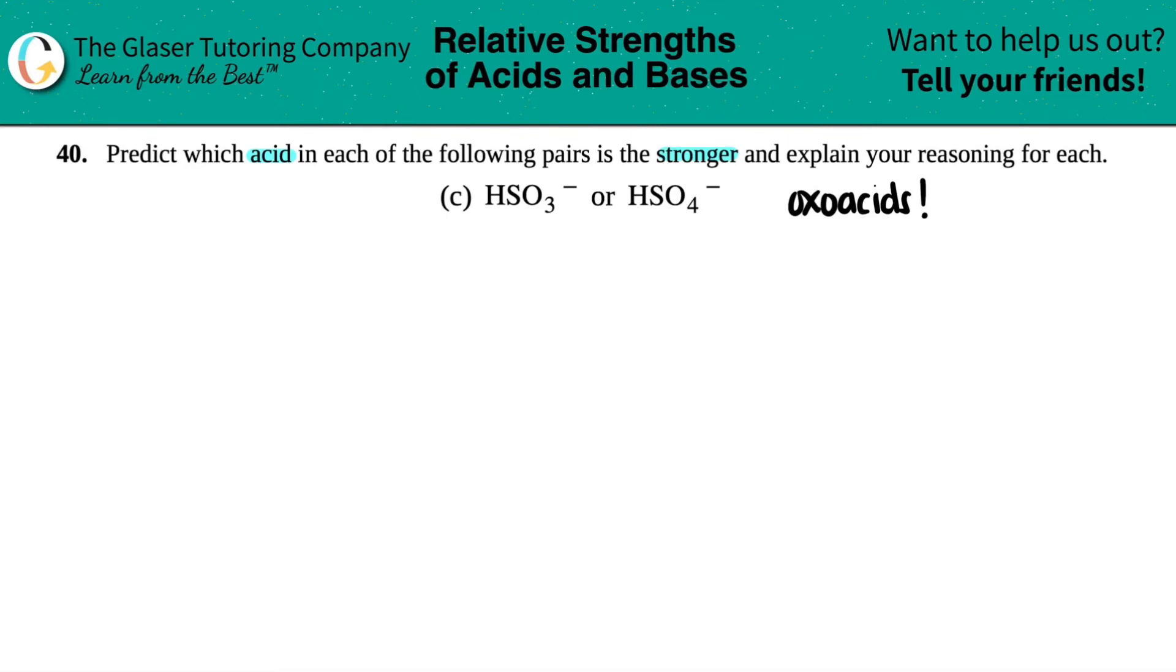Now in this case, they're the same element. So I can't use a periodic table trend to help me figure out which one is more acidic. But the only difference between these two is the number of oxygens. So if you have the same element, which we do in the middle, you will go by the amounts of oxygens.